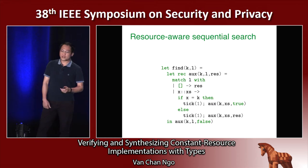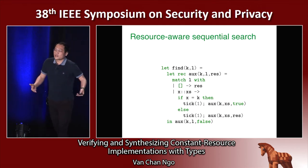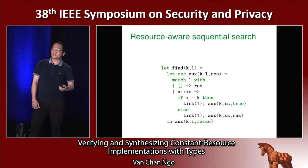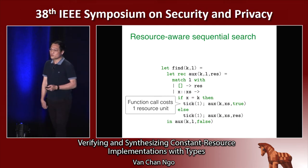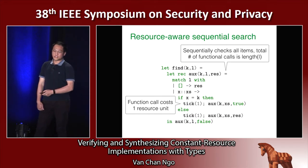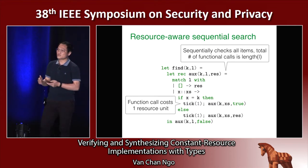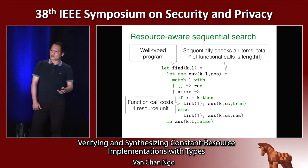Coming back to the previous example, I provide an implementation in the functional language OCaml. We assume that the function 'goal' consumes one resource unit and other operations consume no resource. I use the tick command to indicate that the function 'goal' costs one resource unit and other operations cost zero resource units. Because this function always checks all items in the secret needle from the beginning to the end of the needle, the total number of 'goal' function calls is equivalent to the length of the needle. By definition, this program satisfies the resource-aware non-interference property, and in fact this program is correctly accepted by our type system.